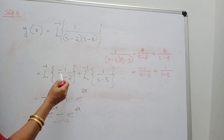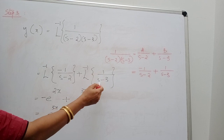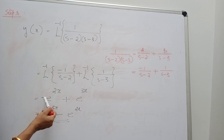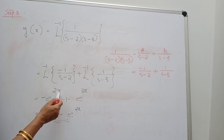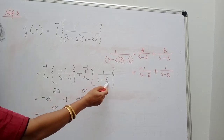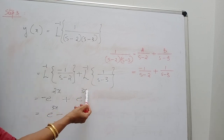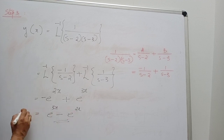Therefore, y(x) = L⁻¹{−1/(s−2)} + L⁻¹{1/(s−3)} = −e^(2x) + e^(3x). The final answer is y(x) = e^(3x) − e^(2x). This way you can solve any ordinary differential equation.